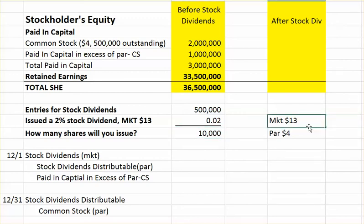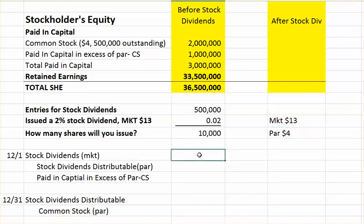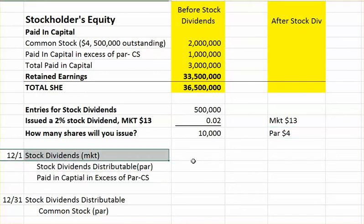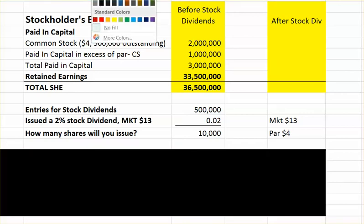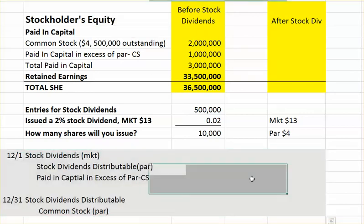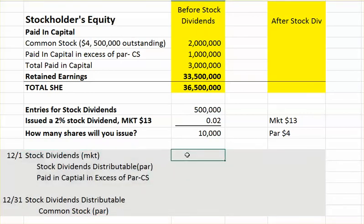The market value of what we're giving away is $13 and the par value is $4. So we're going to debit — here's my journal entry — and I'll gray these out so you'll know these are the journal entries. My stock dividend is going to be a debit for the market value of what I'm going to give away, so it's going to be 10,000 times $13, which is $130,000.